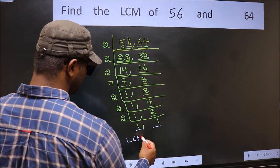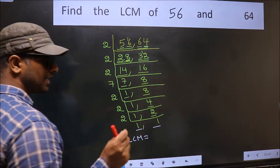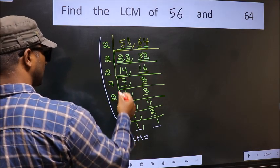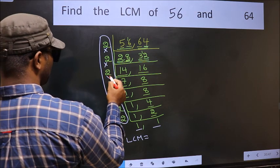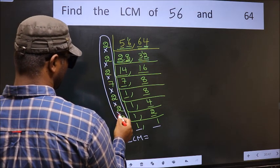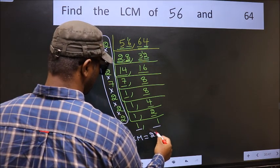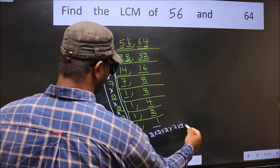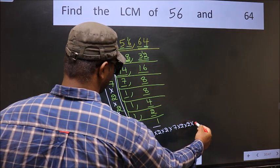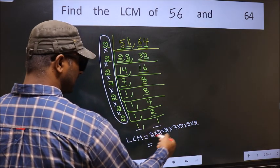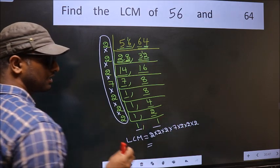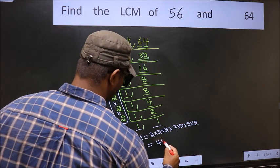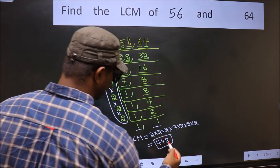So our LCM is - LCM is the product of these numbers. That is 2 times 2 times 2 times 7 times 2 times 2 times 2. When we multiply these numbers, we get 448 is our LCM.